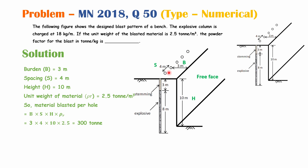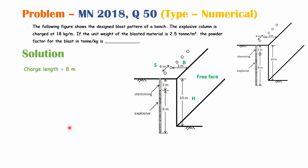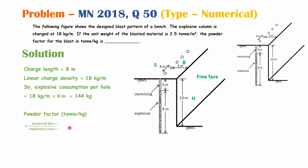Rock blasted per hole equals burden × spacing × bench height × unit weight = 3 × 4 × 10 × 2.5 = 300 tons. Charge length is 8 m and linear charge density is 18 kg/m, so total explosive charge per hole = 18 × 8 = 144 kg. Power factor in ton/kg equals rock blasted per hole in tons divided by explosive consumption per hole in kg = 300 ÷ 144 = 2.08 ton/kg.